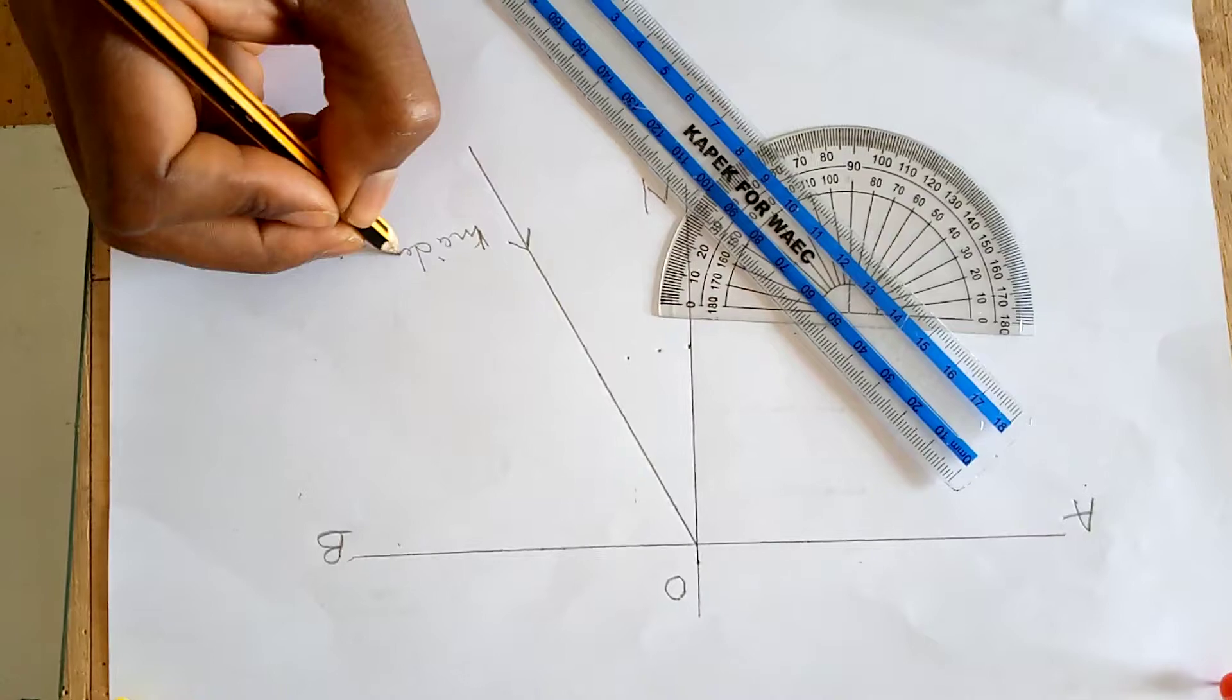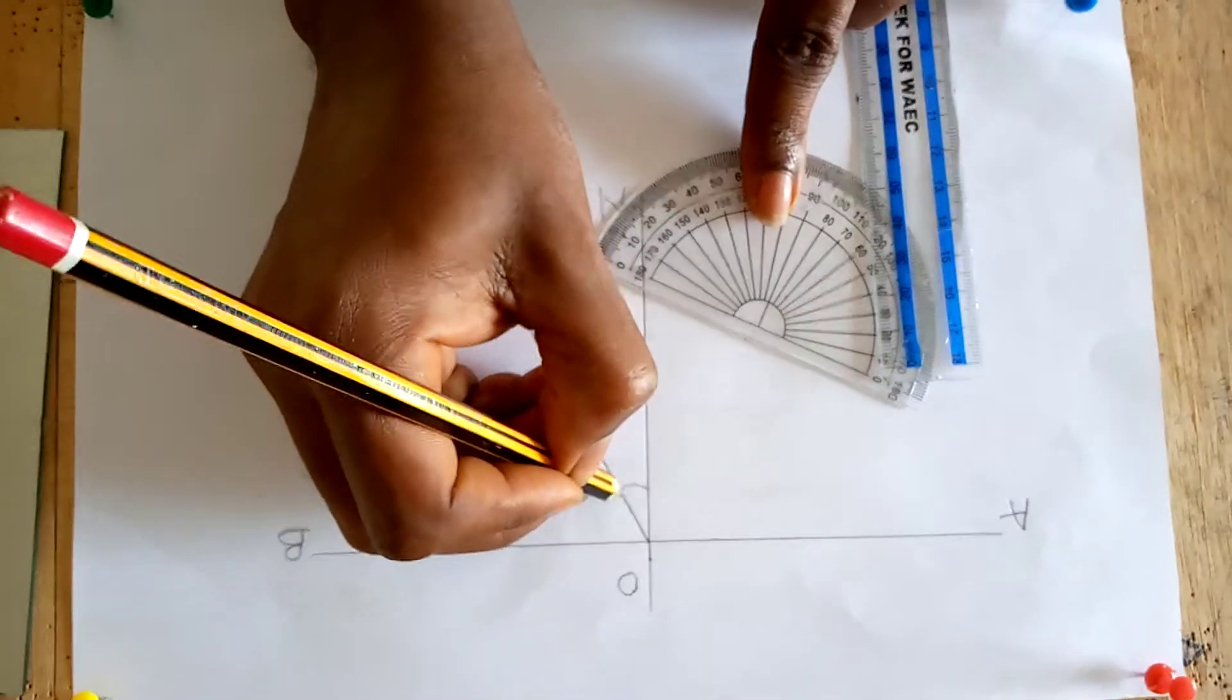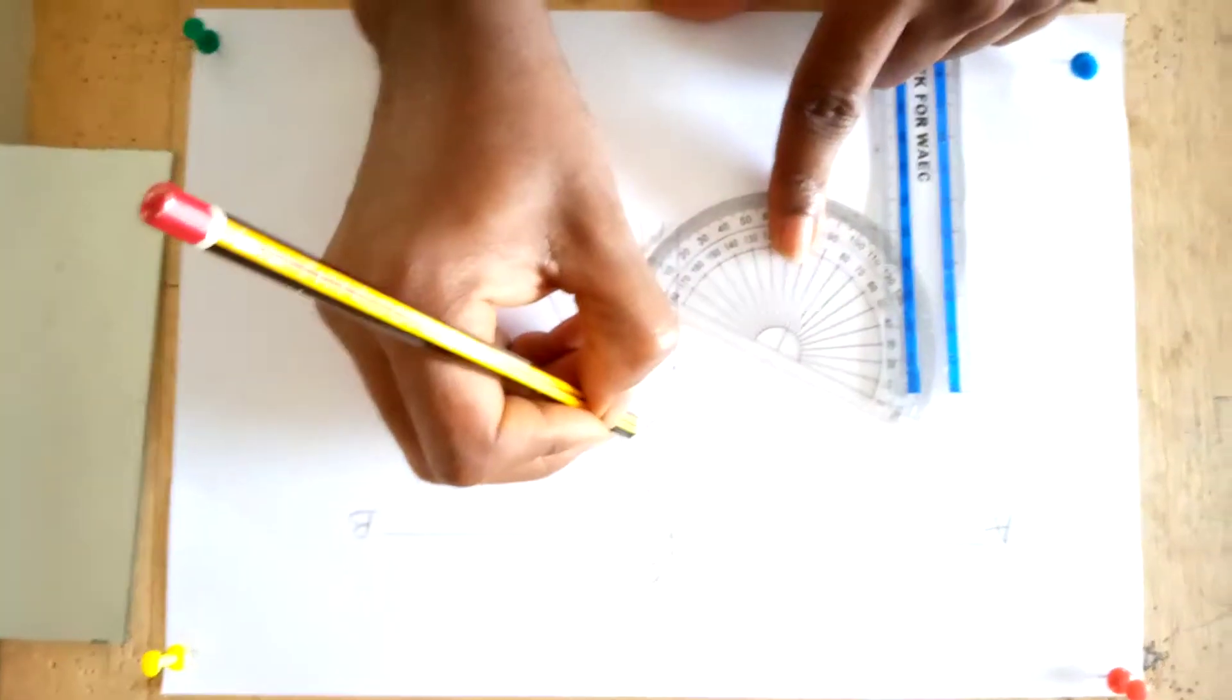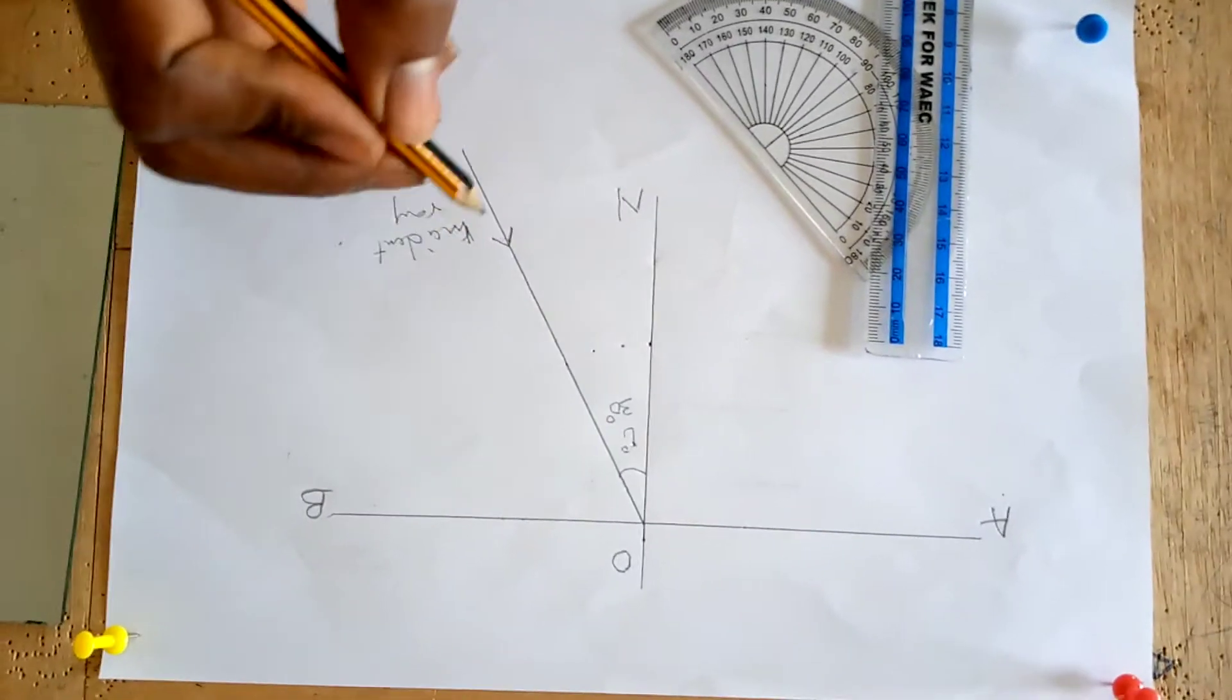This is your incident ray, and here is your incident angle. In this case it is 30 degrees. The incident angle is the angle between the normal and the incident ray.